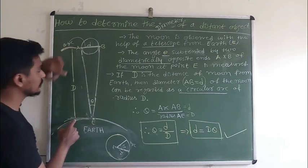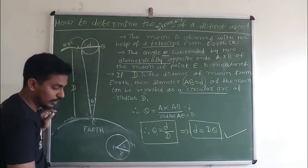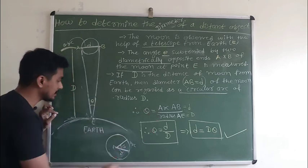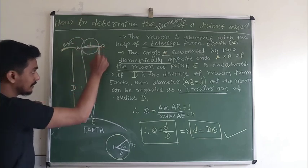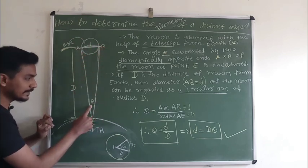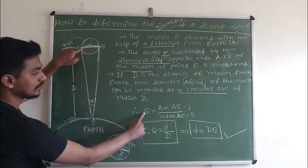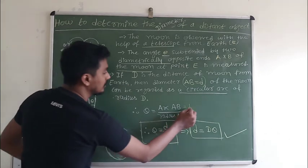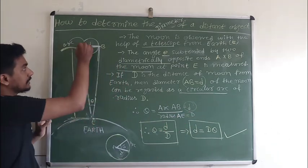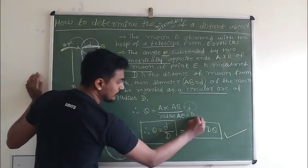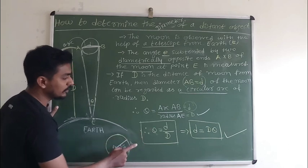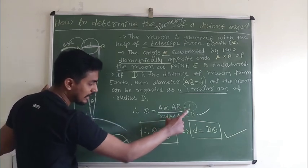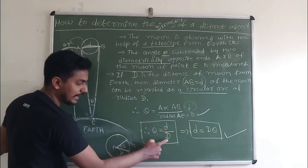This is our arc, this is our radius — we can say the distance D — and this is theta. So theta equals arc divided by radius. Here, this arc is the diameter of the moon, which we call small d, and this radius or distance is the distance of the moon from the earth. We want to measure the diameter, so we make d the subject: d equals D times theta, because theta equals d divided by D.